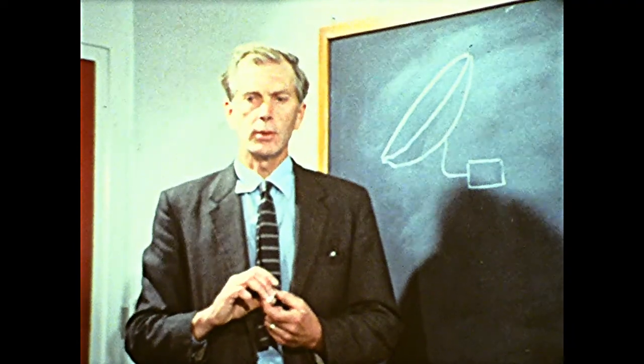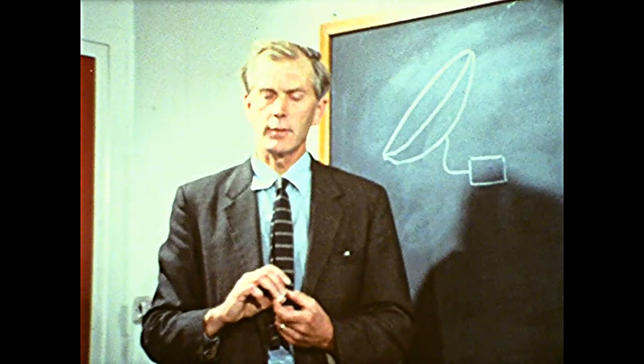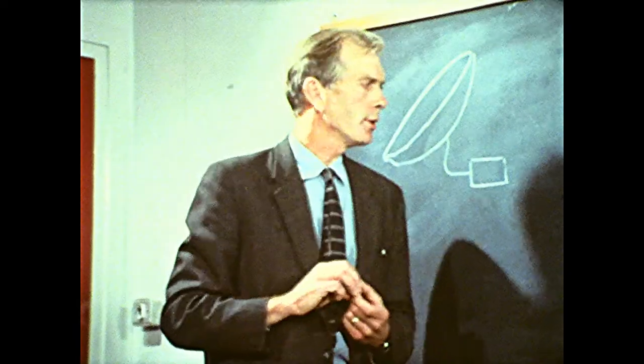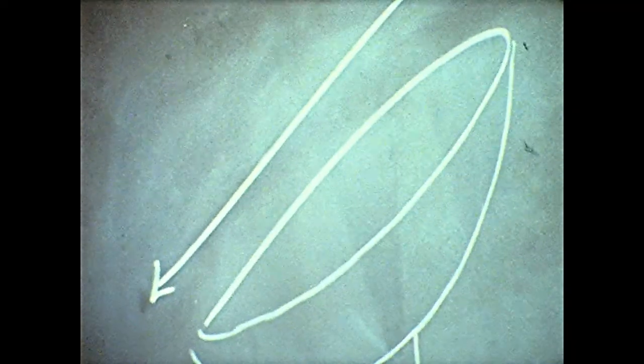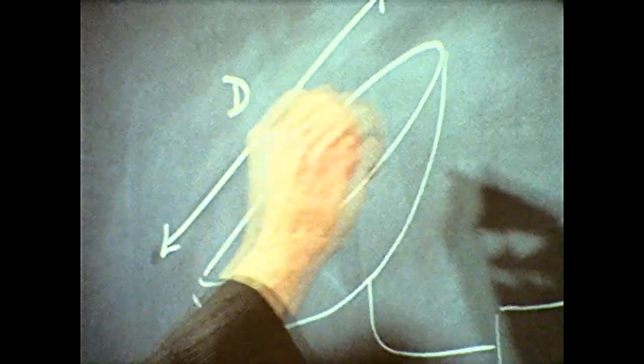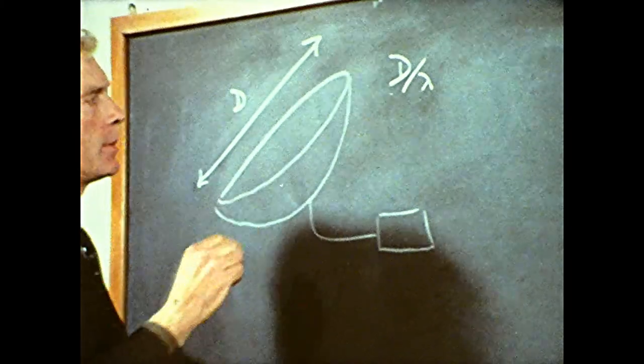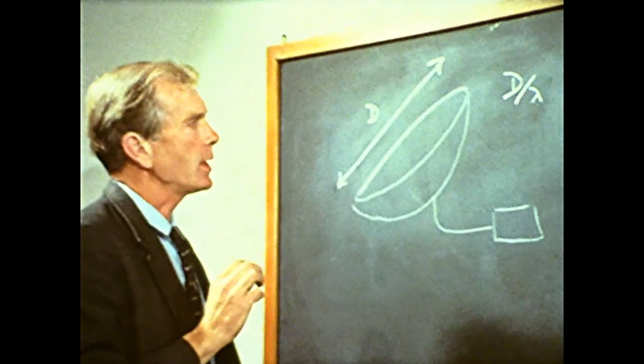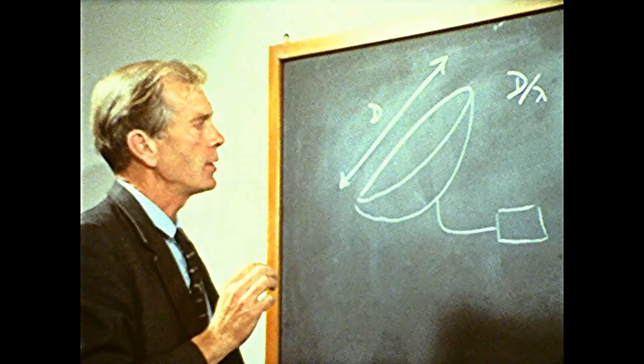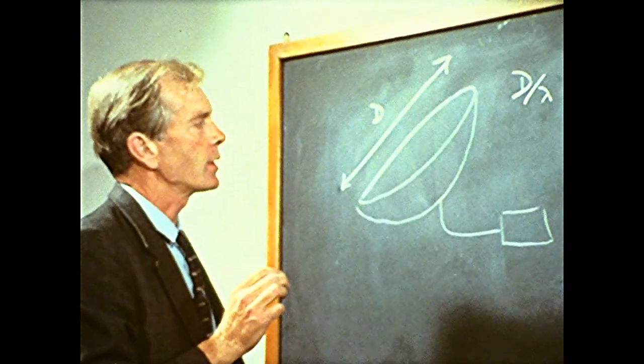Our ability to examine the structure of these sources depends on the ratio between the diameter of the dish, D, and the wavelength at which we are operating. The quantity D over lambda then determines the structure which we can see in our source, and for example, the ability to see whether a given source is double.